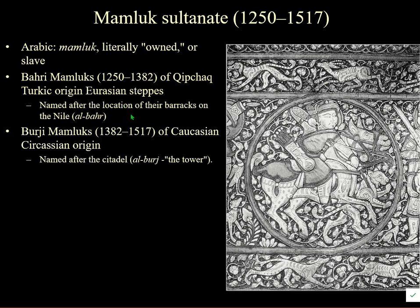Then there are the Burji Mamluks, who are Caucasian Circassians recruited from a different group. They are called Burji Mamluks because they lived in the citadel, called al-Burj — 'the tower.' This carries on until 1517 when they were conquered by the Turks.